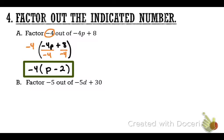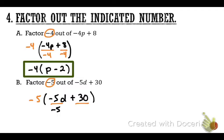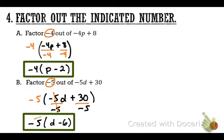For problem B, factor out negative 5. Take negative 5 out and write the original problem inside. Divide every term by negative 5. Negative 5 divided by negative 5D becomes positive 1D — so just plain D. Then positive 30 divided by negative 5 is negative 6. The answer is negative 5 times (D − 6). You can verify: negative 5 times D is negative 5D, and negative 5 times negative 6 is positive 30.